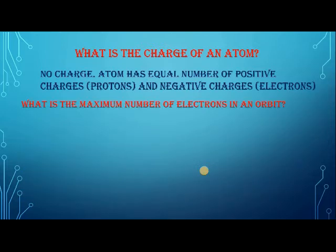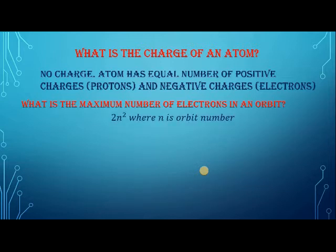What is the maximum number of electrons in an orbit? The number of electrons each orbit can hold can be calculated using the formula 2n², where n is the orbit number. So for the first orbit, it is 2 × 1² = 2. The first orbit carries 2 electrons.